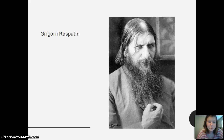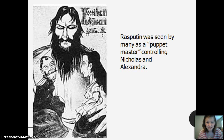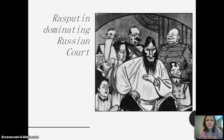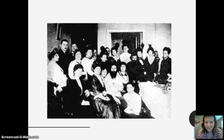With the Romanov family is Grigori Rasputin — one of my favorite people in history. He was seen by many as the puppet master to the Romanovs; he controlled Nicholas and his wife Alexandra and was dominating the Russian court. In this picture of the family, he's right smack dab in the middle — you can tell by the beard.